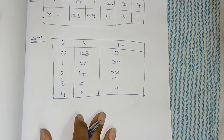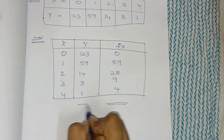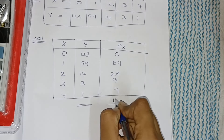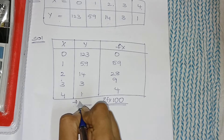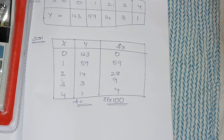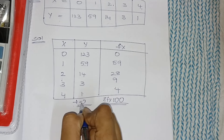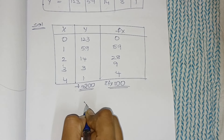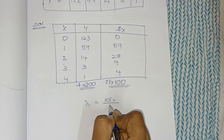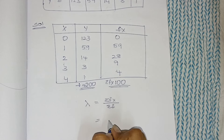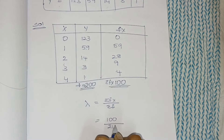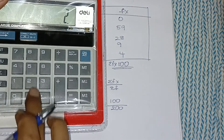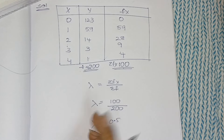For any Poisson distribution question, this is the format: total up fx and total up y. Sigma fx = 59 + 28 + 9 + 4 = 100. Sigma f = 123 + 59 + 14 + 3 + 1 = 200. We do this step to calculate lambda. The lambda formula is sigma fx divided by sigma f, which is 100 divided by 200, giving lambda = 0.5.